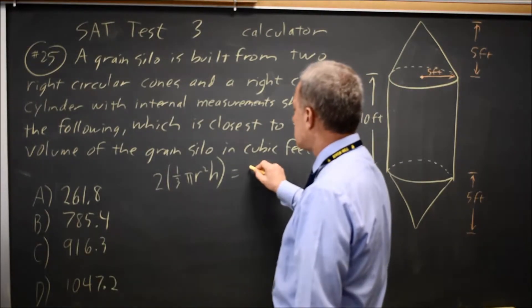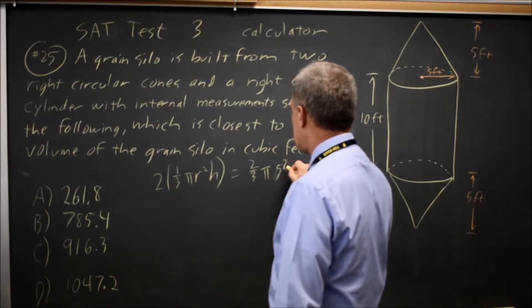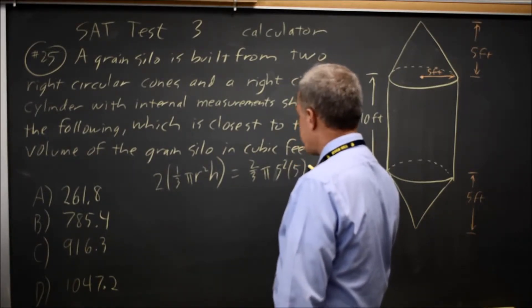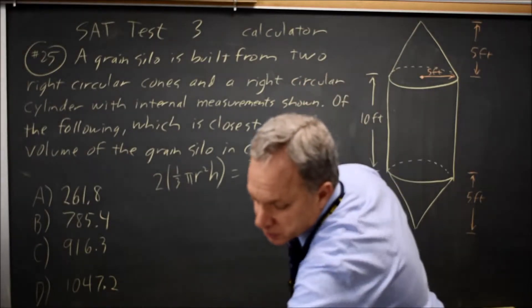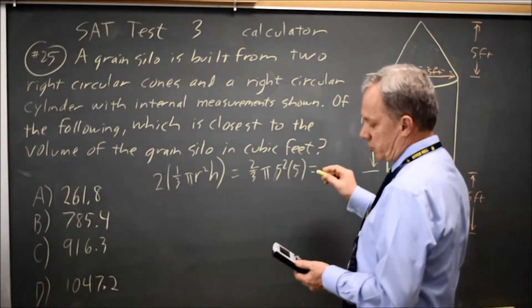So that is 2/3 π, r is 5 times 5. This is a calculator question. On the calculator, we're told that's 130.9.